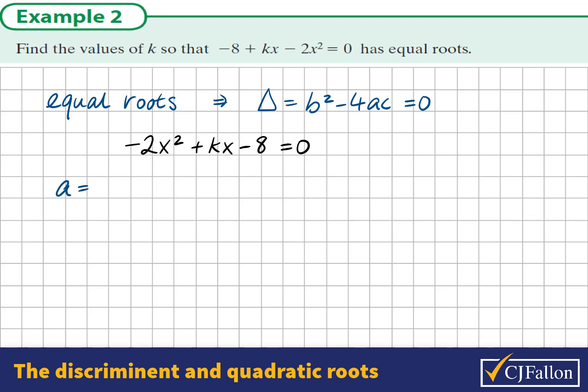Allowing that that's true, we see that a is equal to -2, b is equal to k, and c is equal to -8.